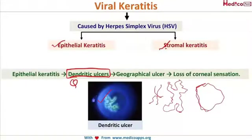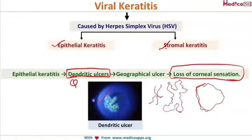This branching dendritic ulcer further progresses into a geographical ulcer — it becomes like the map of a country — ultimately resulting in loss of corneal sensation. This is an important clinical feature. Whenever you suspect a viral corneal ulcer, you can touch the patient's cornea with a wisp of cotton. In the normal eye, corneal sensations are preserved and the patient blinks; however, this is absent in the eye with herpes keratitis.